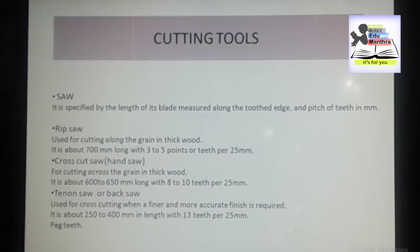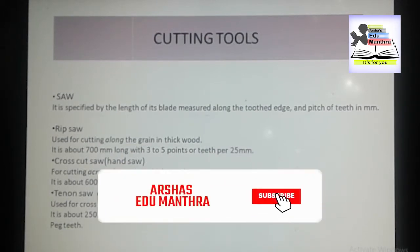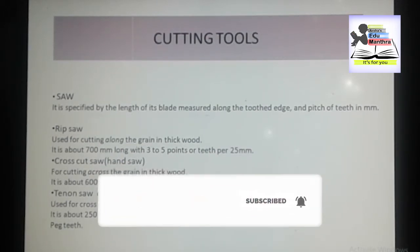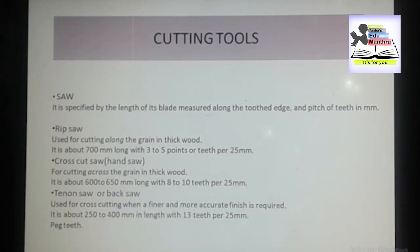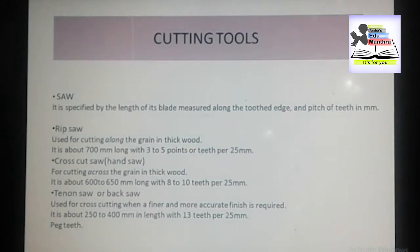Next we have the cross cut saw. The cross cut saw is also known as a hand saw. It is used for cutting across the grain — unlike the rip saw which cuts along the grain. They are 600 to 650 mm long with 8 to 10 teeth per 25 mm.